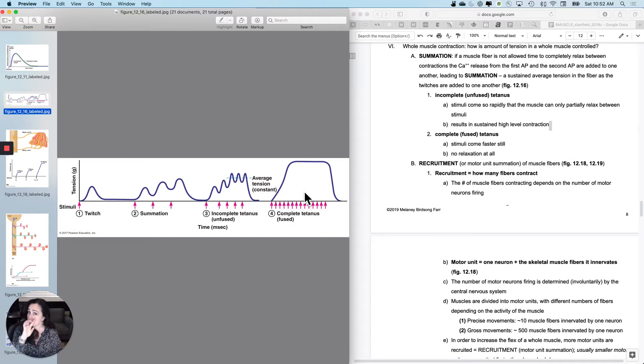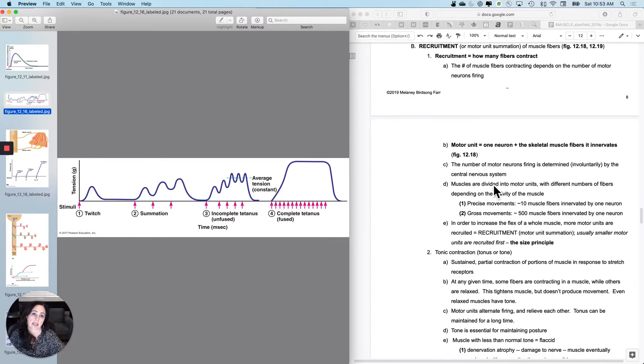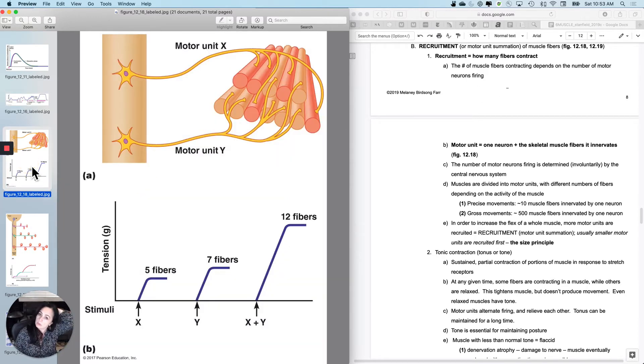But of course, a muscle is not just made of one fiber. So now let's talk about how I can get a whole muscle to contract minimally, maximally, or something different. This is called recruitment. And it basically has to do with how many muscle fibers in the muscle you are going to use for that contraction. It's also sometimes referred to as motor unit summation. The number of muscle fibers contracting depends upon the number of motor neurons that are firing or stimulating it. So I need to introduce you to the concept of a motor unit.